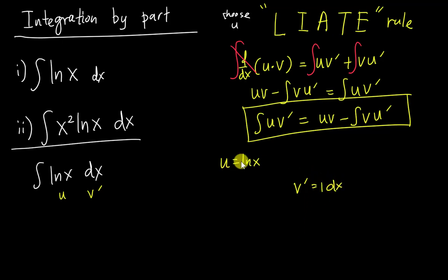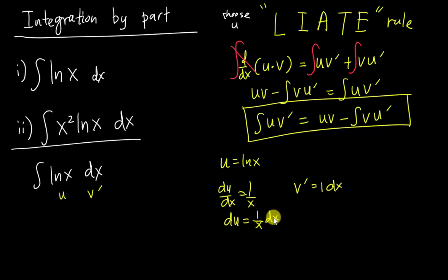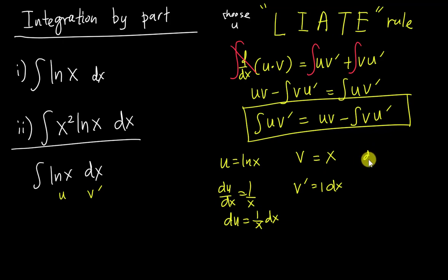So u = ln(x) and v' = 1·dx. Differentiating u: du/dx = 1/x, so du = (1/x)dx. For v, since dv/dx = 1, integrating both sides gives v = x.